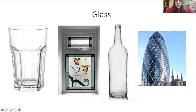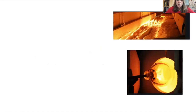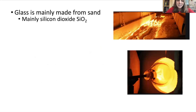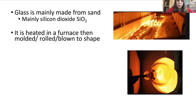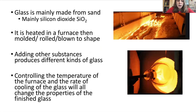Think about glass then. We use the word glass every day, but actually in chemistry terms there are lots of different things we mean by glass. In general terms, glass is mainly made from sand, so in a chemical sense it's mainly made of silicon dioxide. You put that into a furnace and you heat it up and then you can mold it, roll it or blow it into shape. You can add other substances, which will make different types of glass, and by controlling either the temperature of your furnace or the rate of cooling, you can change the properties of your glass.